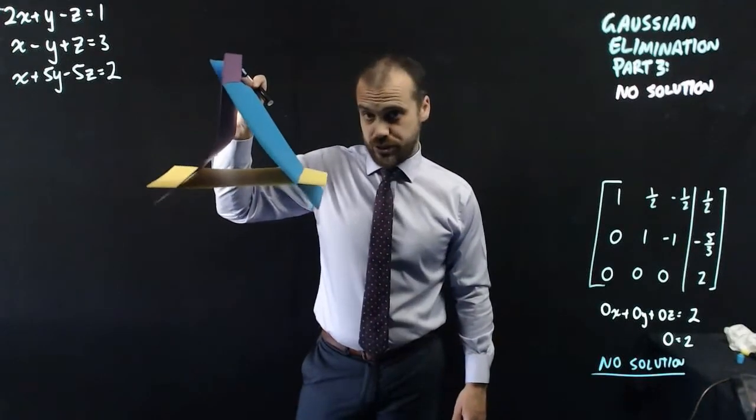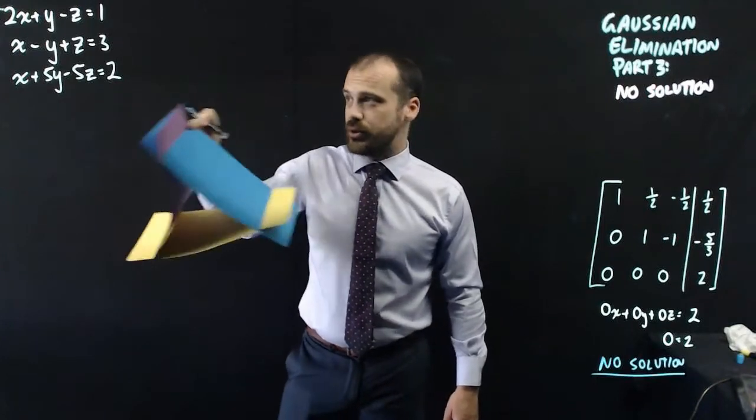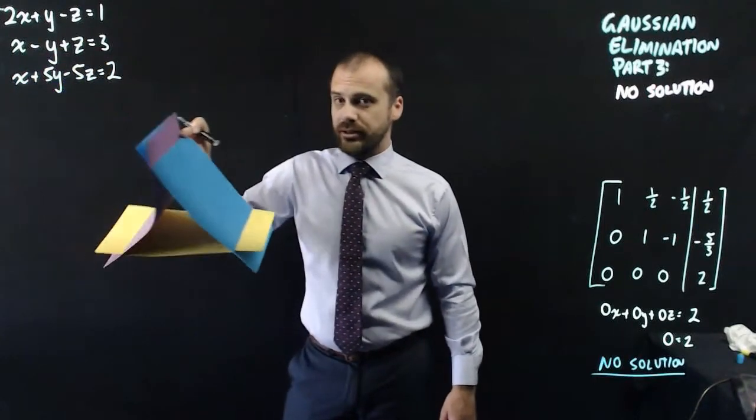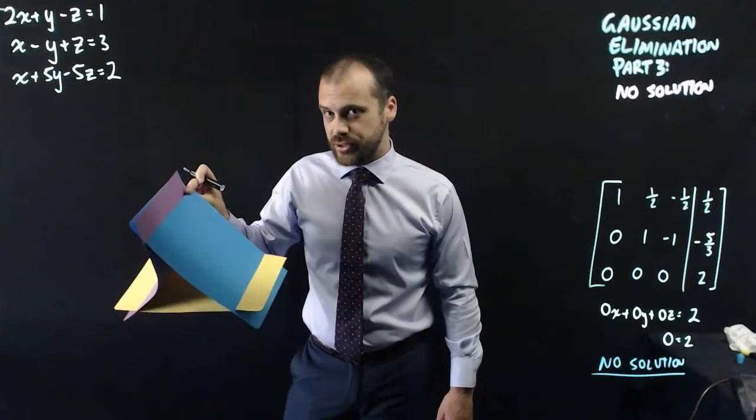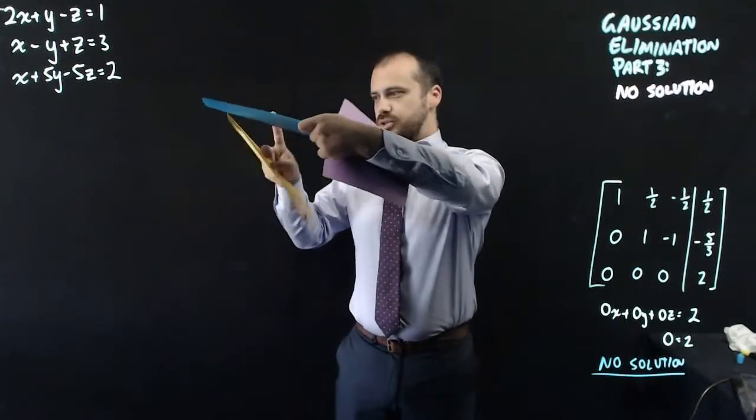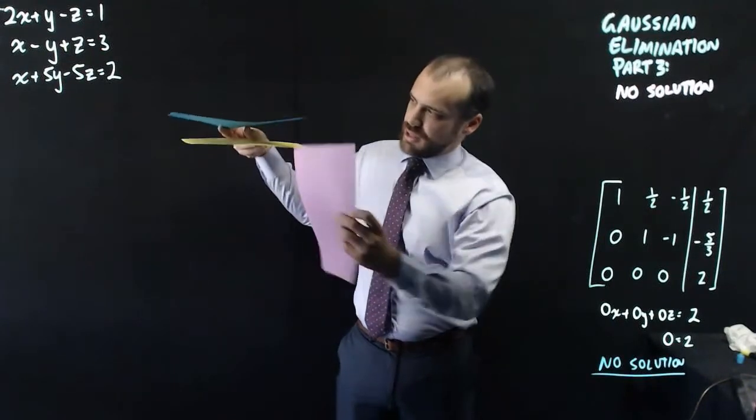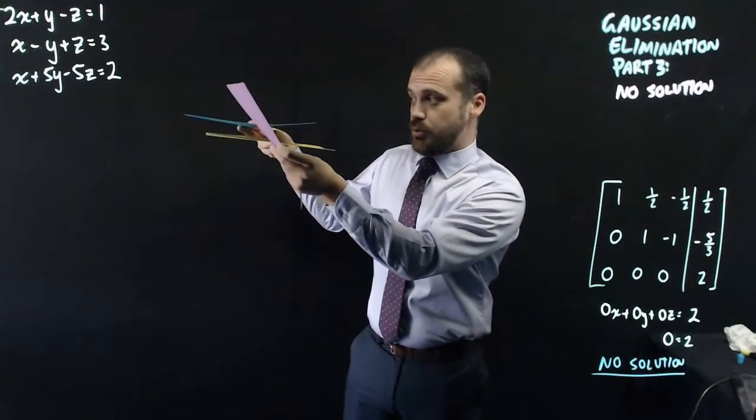This is our geometric interpretation of this. There is one more. If two of them were parallel, and the other one wasn't parallel to them, you'd end up in a situation with two parallel ones, and then one kind of passing through them in some way.